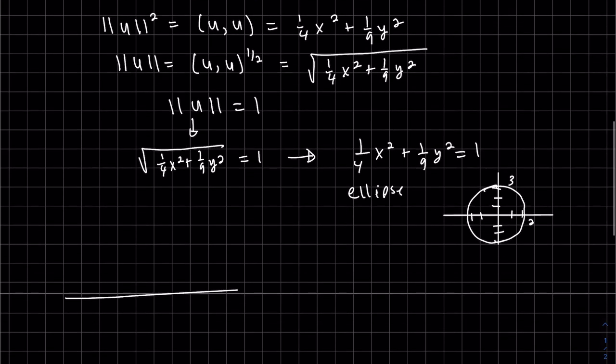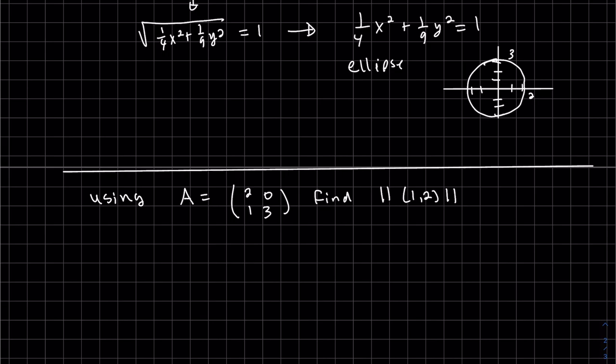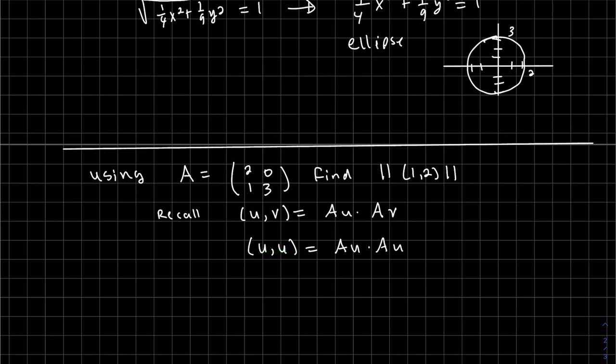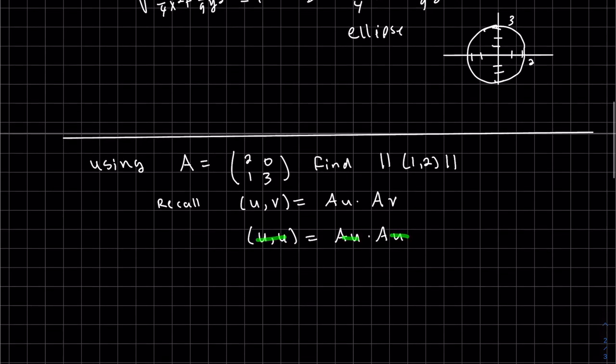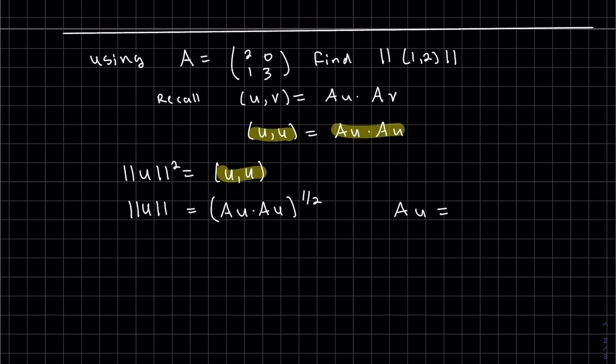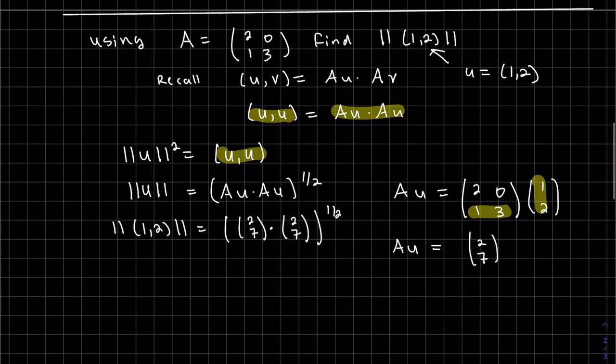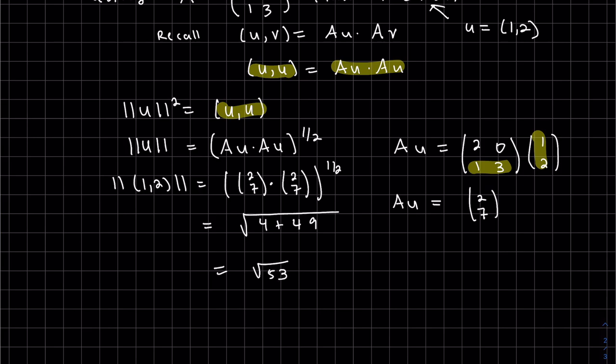Let's do another example. So this is going to be the matrix-induced inner product. So recall. But I want the inner product of u with itself just be au dot au. So we need to find au. So au is 2, 7. So we just take the dot product and then the square root. And that's our answer.